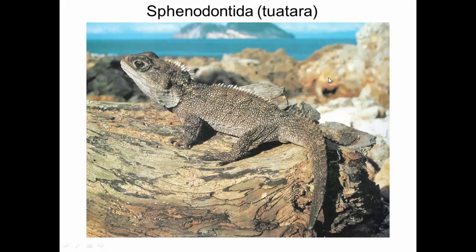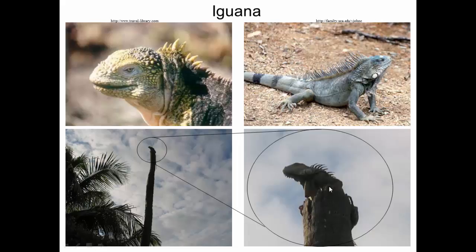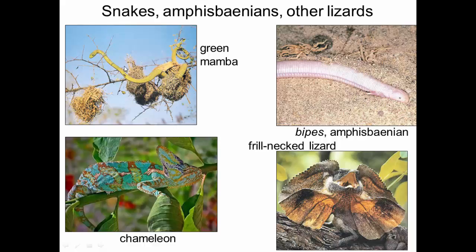Here are iguanas — this one is on top of a telephone pole. Iguanas are basal to the rest of the Lepidosaurs. Within the group we have snakes, amphisbaenians, and other lizards. Chameleons are interesting lizards with evolved color patterns and zygodactylous feet that allow them to clamp onto branches. There's also the frilled-neck lizard that makes itself look fierce. Amphisbaenians are limbless or mostly limbless lizards — distinct from snakes, which are their own monophyletic group. This is Bipes, which has tiny front limbs and no hind limbs, living underground much like caecilians. So a lot of the diversity of reptiles we see are in Lepidosauria, with a wide range of snakes and lizards.